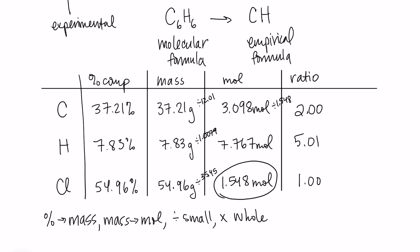Now, the last step here is to multiply till whole. All of my numbers that are here are whole numbers. 5.01, we're just going to round to 5. So we don't actually have to multiply by anything, but we'll just round so that we get the whole number ratio. So that'll be 2, 5, and 1. And my empirical formula is C2H5Cl1. And we normally don't write the 1. So that's my empirical formula practice problem.